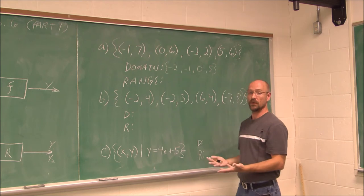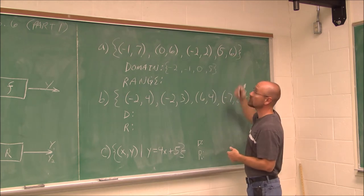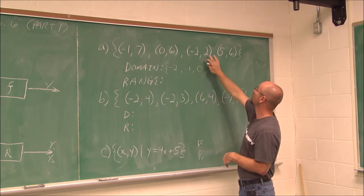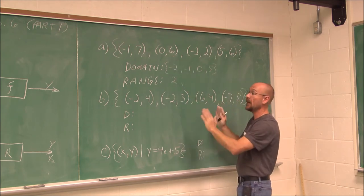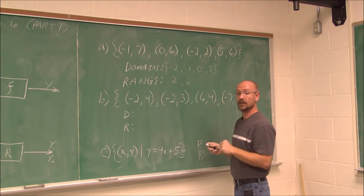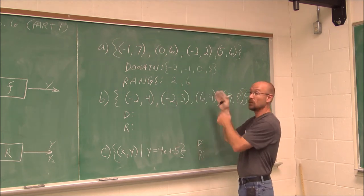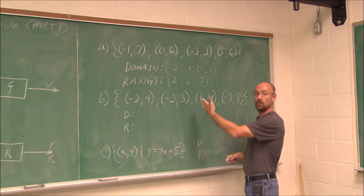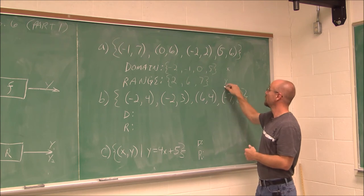Range is defined as all the output values. The output values we have are 7, 6, 2, and 6. I want to write those in least to greatest form as well. My smallest value is 2, then 6 — but it repeats. That's OK when dealing with range. It's still a function because the x was unique. The y doesn't necessarily have to be unique, and I don't have to repeat the value for range — just the unique ones: 2, 6, and 7. So range is just the output, the y values. Domain deals with x, and range deals with the y's.